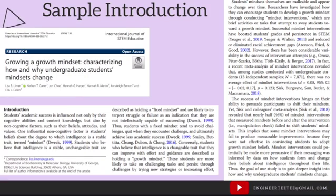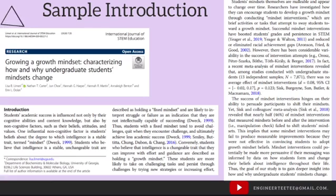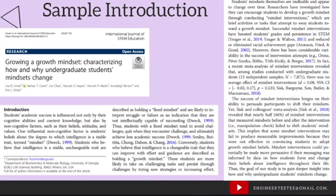Let's have a look at another introduction. This is a sample introduction for a research paper. Here again we can see that it develops the topic, cites key references, and states the aim of the study. It gives us background on the study — in this case looking at the growth mindset for undergraduate students — along with references and numbers from previously done studies. At the bottom, it tells us the goal of the study, which is to gain deeper insight into how and why undergraduate students' mindsets change. We can see that this is really important for both industrial and academic reports.